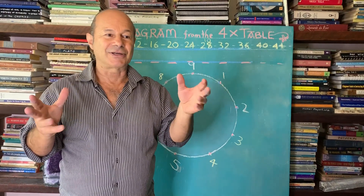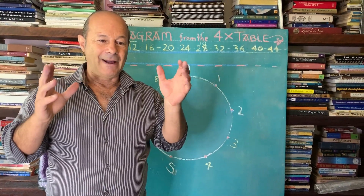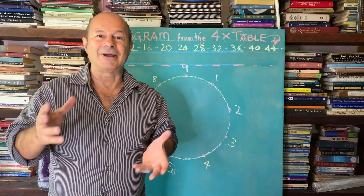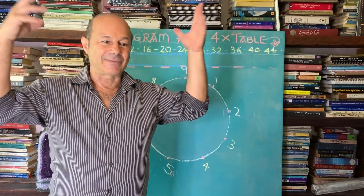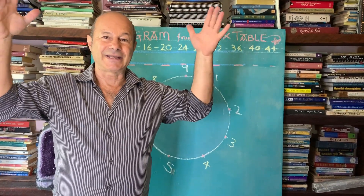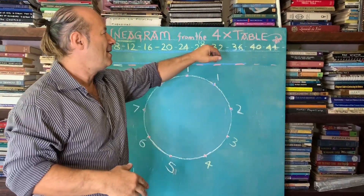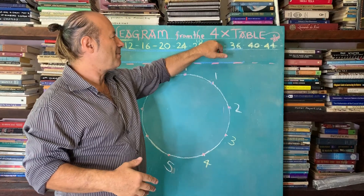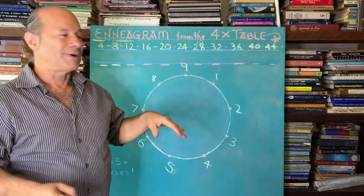Number four is about structure, focus, and crystallisation — having ideas. Sometimes we have lots of ideas and they don't settle down. Focusing on the number four will help us build. It's the builder.